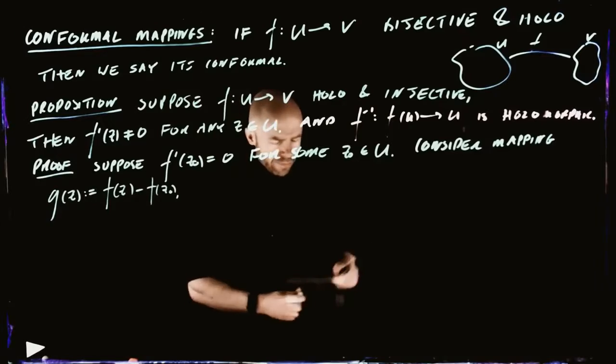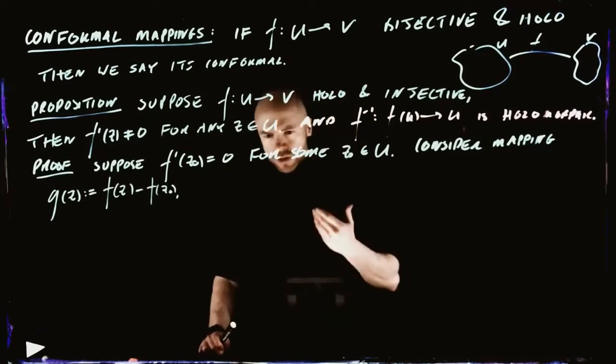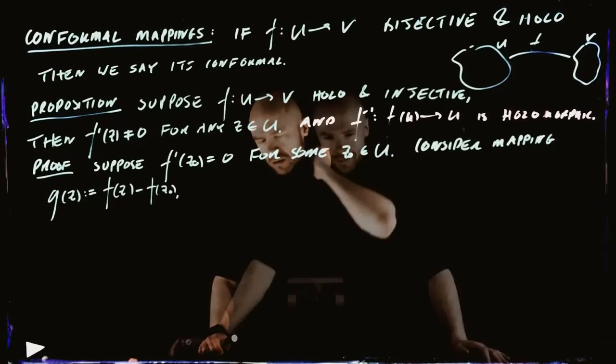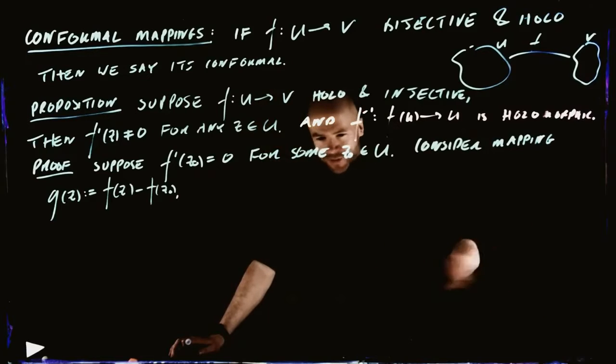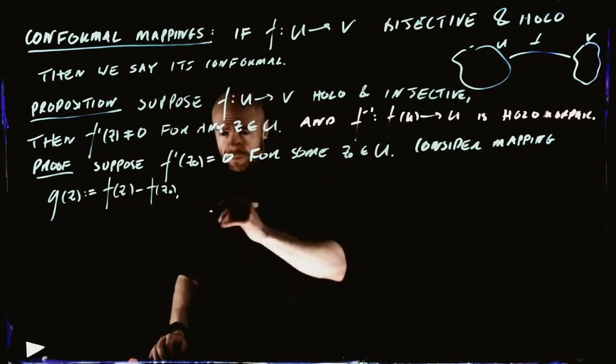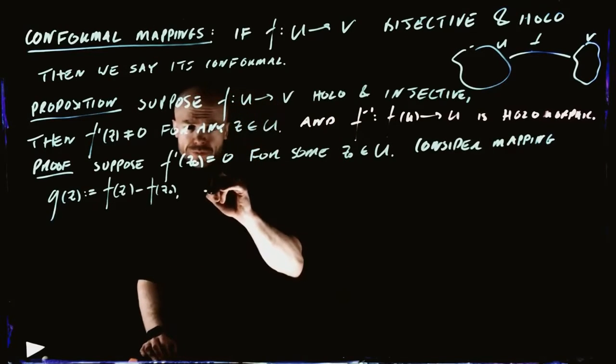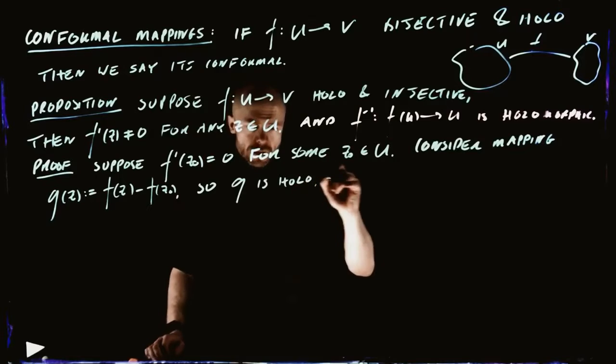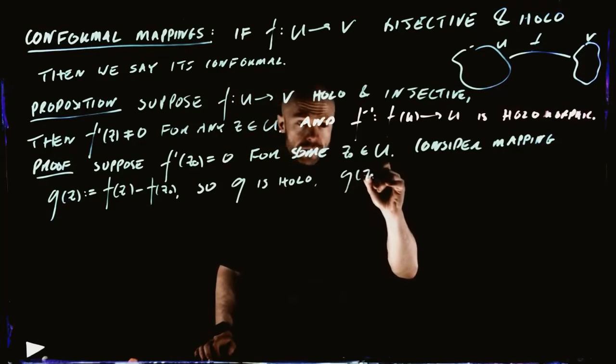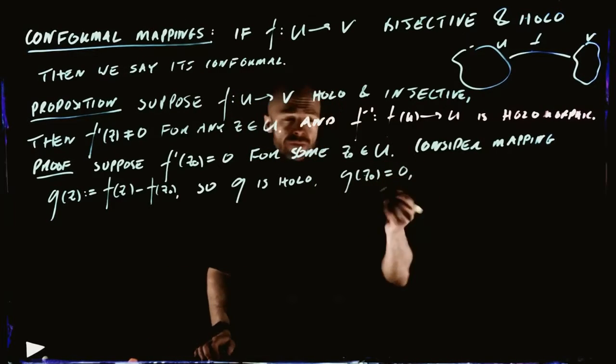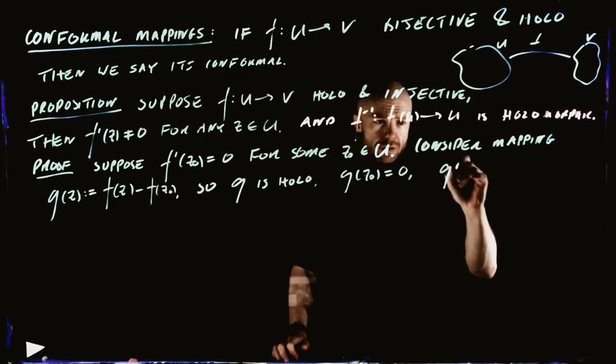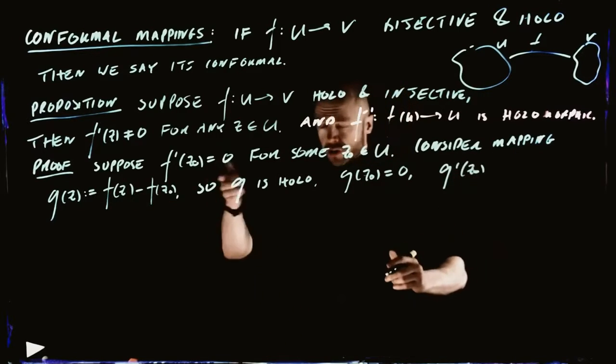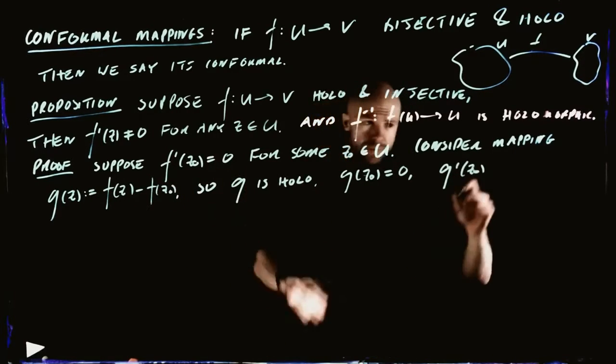Tell me about G(z), in particular, tell me about G(z) around Z0. Audience participation. We know it's holomorphic, right? We know that the way we've constructed it, G(Z0) is 0, and the derivative is also 0, because just differentiate this thing.